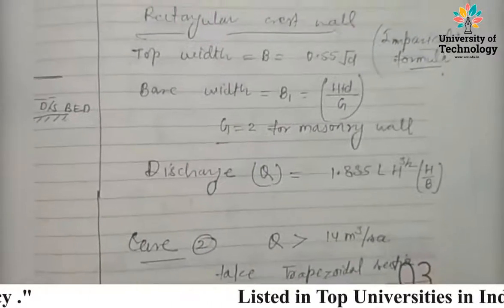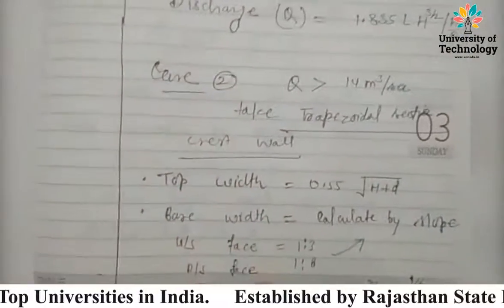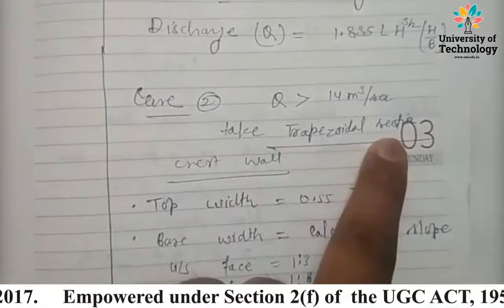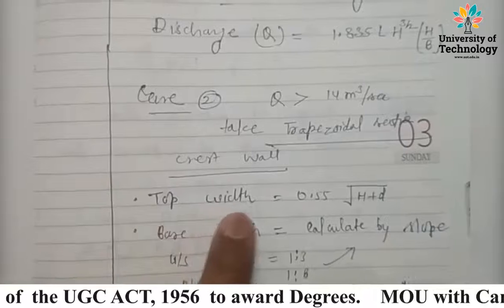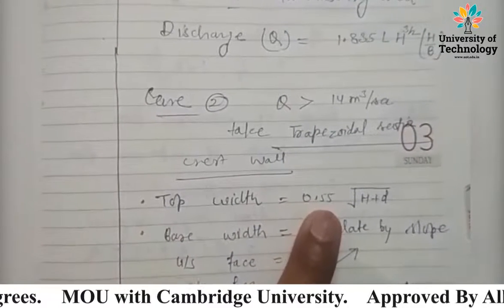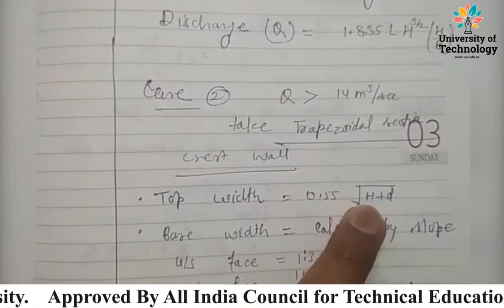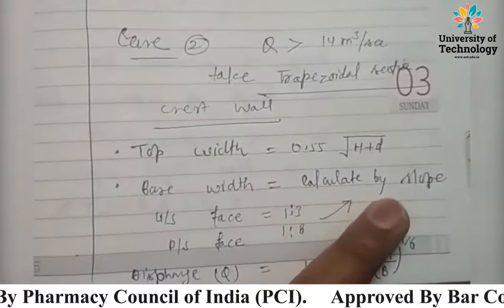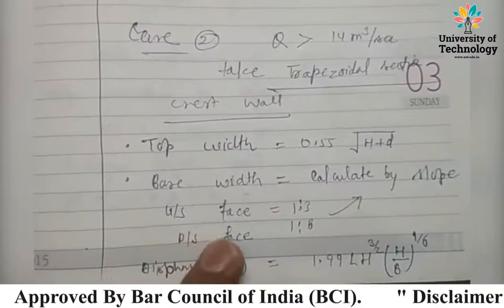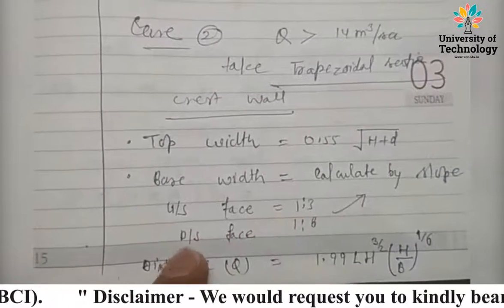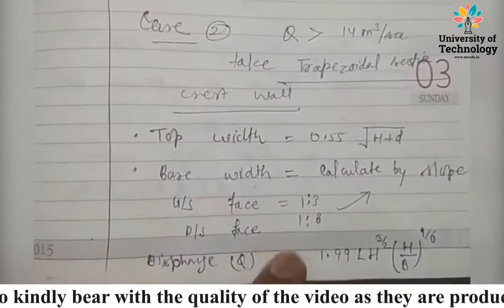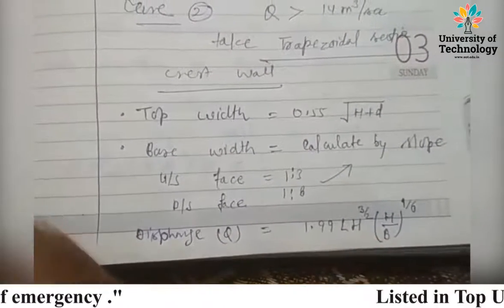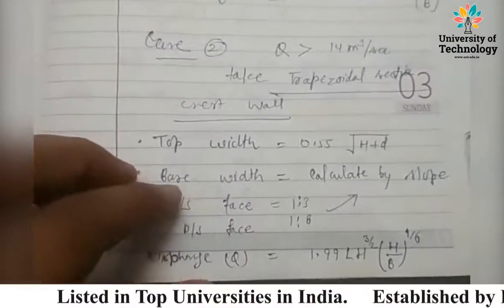Case two: when discharge is greater than 14 cubic meters per second, we prefer a trapezoidal crest wall. Top width B is calculated as 0.55 × √(H + d). Base width depends on the slope — upstream face slope is 1:3 and downstream face slope is 1:8. Discharge is calculated by: Q = 1.99 × L × H^(3/2) × (H/B)^(1/6).